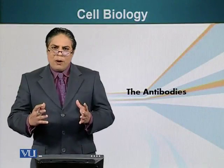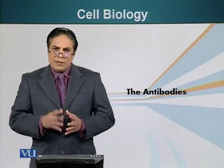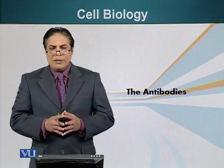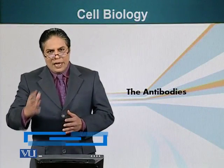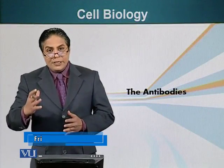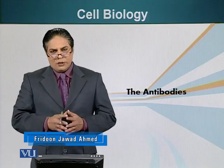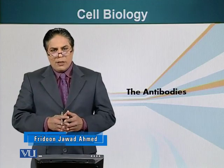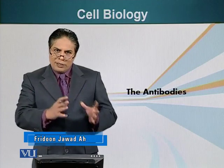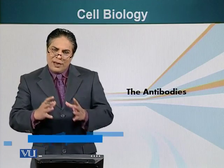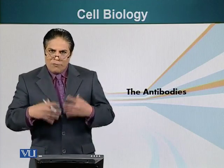I have told you about two types of antibodies that appear on the surface of the B cell: the IgM and IgD. In fact, there are actually five different classes of antibodies. Let's look at the differences between these different antibodies and how they function.